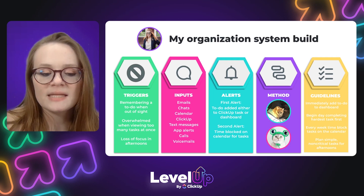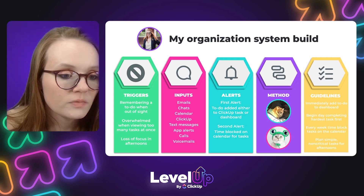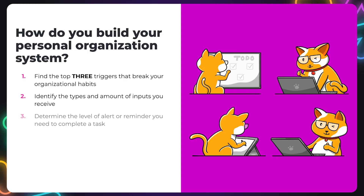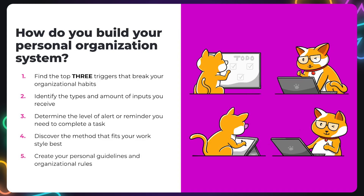Now let's take a look at the steps again so you can create your own guidelines. First, you're going to find the top three triggers that break your organizational habits. Then you want to identify or track the types and amounts of inputs you receive on a daily or even hourly basis. That's going to allow you to determine the level of alert or reminder you need to complete a task. From there, you're going to research and discover the method that fits your work style best. And lastly, after you gather all of this information about your personal productivity habits, you'll create your own rules and guidelines using ClickUp as the tool to level up your system.